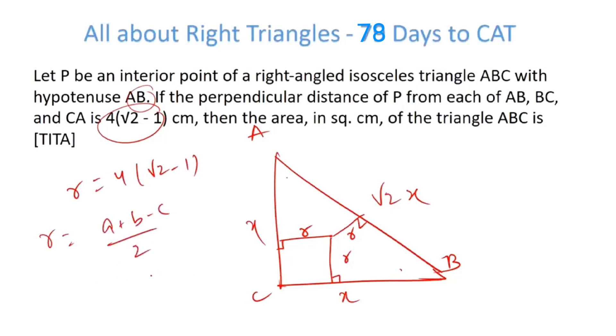So this becomes 2X minus root 2X by 2. We just equated 2X minus root 2X by 2 is equal to 4 into root 2 minus 1. Let's take root 2X common. So root 2 minus 1 is equal to 8 into root 2 minus 1. So this gets cancelled.